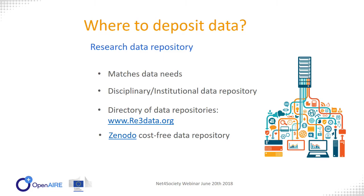Just as you have publication repositories, you also have research data repositories. You have disciplinary data repositories and institutional data repositories. There is a directory — just as OpenDOAR is a directory for publication repositories — called re3data, where you can filter on discipline or country. Zenodo can also be used to store data and link it to your project and article output.